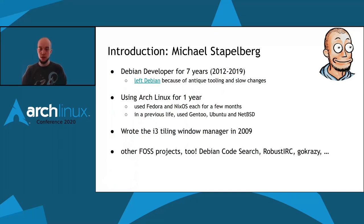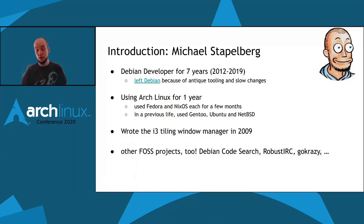I have been a Debian developer for seven years, from 2012 to 2019, until I finally left Debian because of antique tooling and slow changes. You can click the link on the slide to read my blog post about it. I've been using Arch Linux for about a year now. Previously I tried Fedora and NixOS each for a few months, and in a previous life I also used Gentoo, Ubuntu, and NetBSD — so I've seen a couple of different systems.